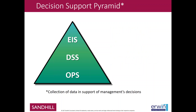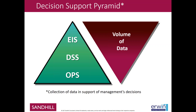Traditional decision support systems have a similar pyramid. At the very bottom, using data, were the operational analytic systems, which were grouped together to form decision support systems, and ultimately executive information systems. Decision support was defined as the collection of data in support of management's decisions — management information systems, or MIS. The volumes of data required for each different type of decision support system was an ever-growing amount until you hit the highest levels in executive information systems.